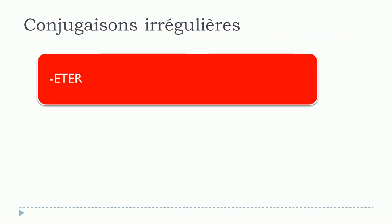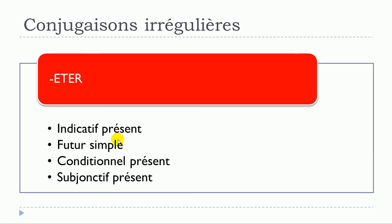So remember: for verbs ending in ETER like ACHETER, you will have to modify the conjugation at the Indicatif Présent, the Futur Simple, the Conditionnel Présent, and the Subjonctif Présent. For all the other tenses, the verb will behave like a normal ER verb.